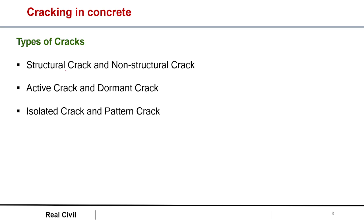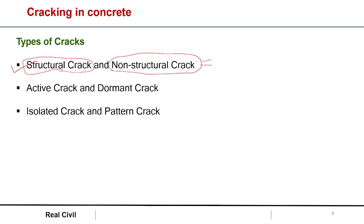Basically there are three types of cracks we have divided. First one is the structural crack and non-structural crack. Structural cracks are where we have to give attention because they are harmful for our structure. There are many types of cracks categorized under non-structural crack — they are not much harmful to our structure, so we can ignore such types of cracks.